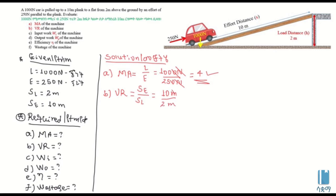So it's 10 meters over 2 meters. This means these values give us 5. We can see that the velocity ratio equals the mechanical advantage. Mechanical advantage is equal to the velocity ratio — both equal to 4.